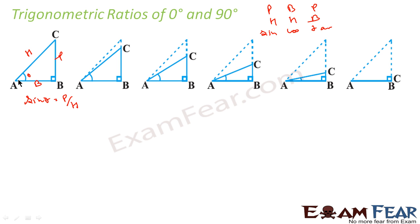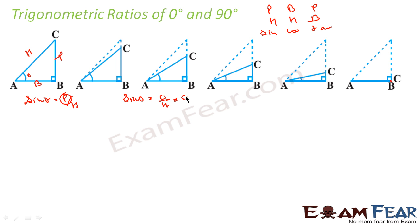Now, if I am reducing theta to 0, the value of p is reducing — p is less and less, lesser and lesser, and p is almost 0. So in case of sin 0, p will be almost 0, and h will remain h. So 0 by h will be 0. Therefore, sin 0 will be 0.